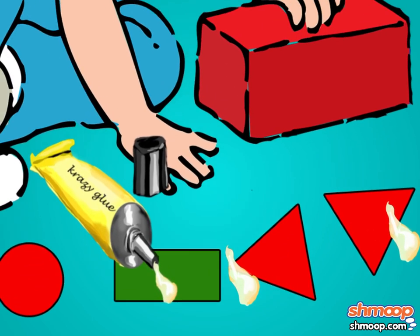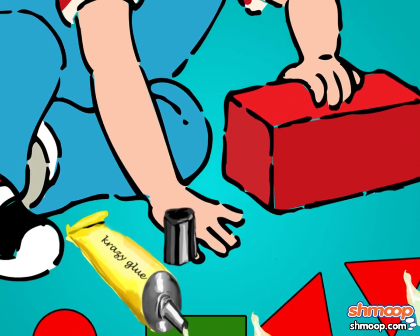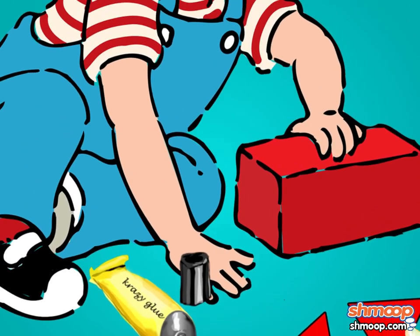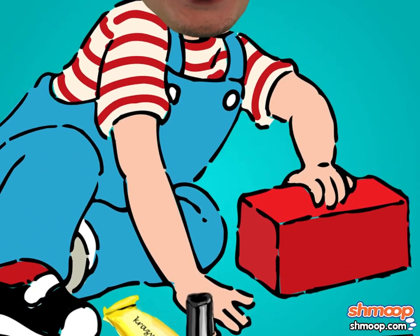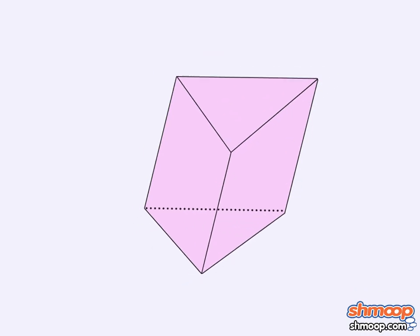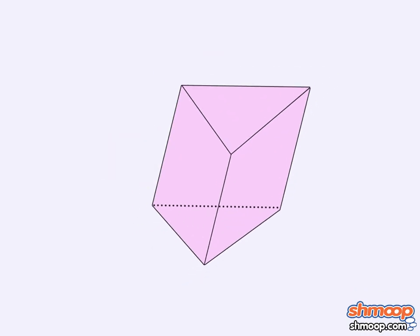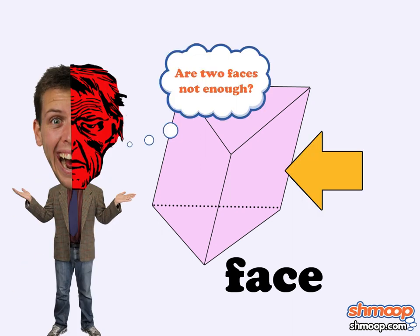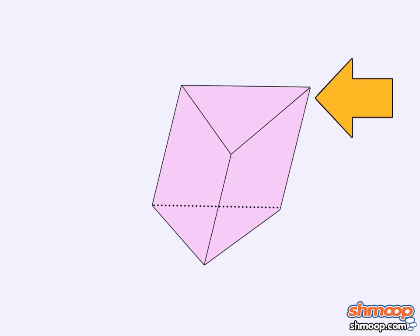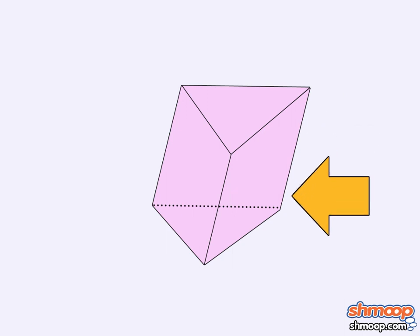Most 3D shapes you can make by gluing a bunch of 2D shapes together. Be careful with crazy glue, though — you don't want to walk around with a cylinder glued to your head. A flat surface of a shape is called a face.